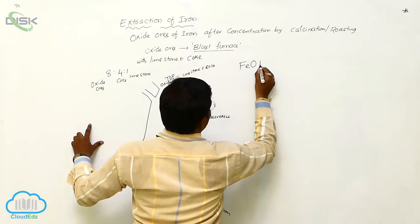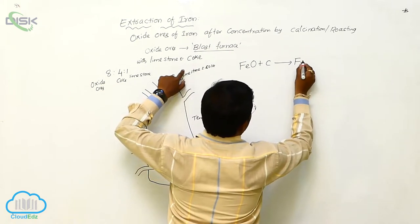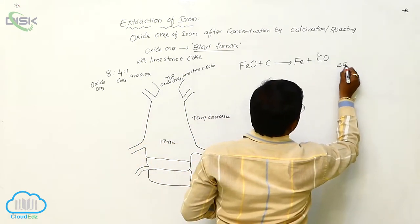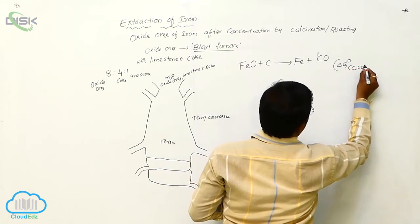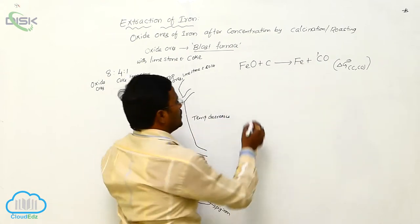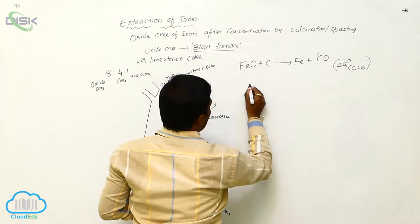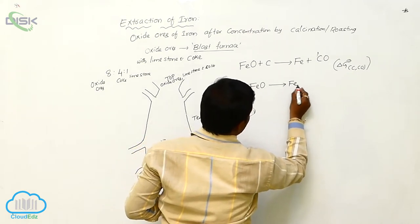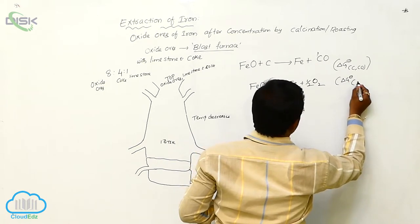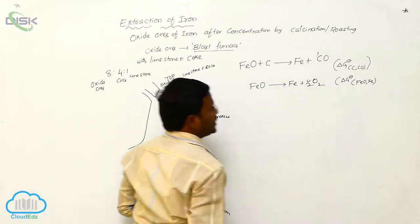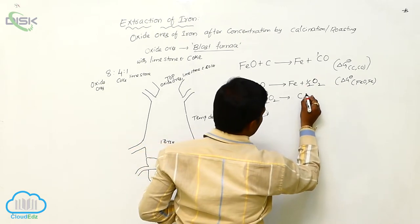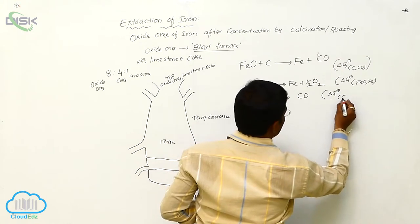iron oxide by reacting with coke converts into iron plus carbon monoxide. We can write delta G for carbon to carbon monoxide. That means iron undergoes reduction where carbon undergoes oxidation. This is the complete reaction, but during the process, first iron oxide participates in reduction and produces iron plus half O2. We can write delta G minus equals FeO to Fe. Similarly, in the next step, coke or carbon reacts with oxygen and converts into carbon monoxide. We can write delta G minus equals C to CO.